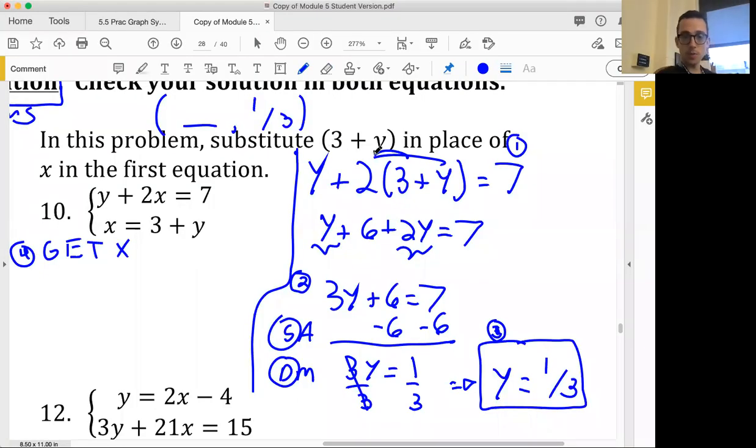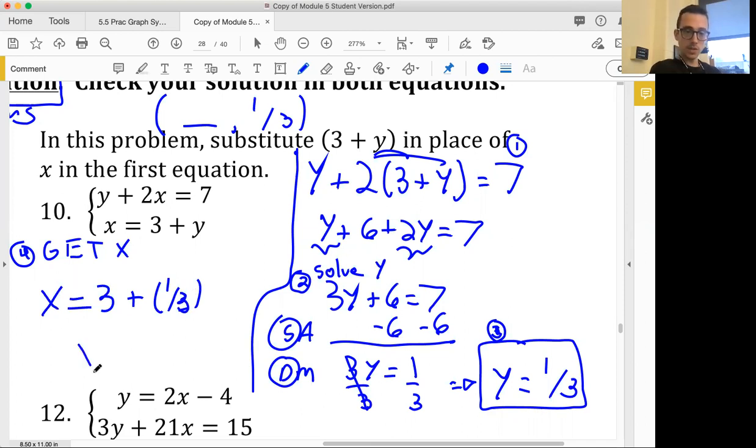You should have gotten this far. You should have plugged in 3 plus y in place of x for the first equation. You should have distributed. You should have eventually solved for y. Here you were solving for y. Eventually you're subtracting 6, dividing by 3, which is okay. You're eventually saying that y equals 1 third. Eventually you can hop over here to step 4 and you're getting x. You know that x equals 3 plus y, but you can now write y as 1 third. So we can now say that x equals 3 and 1 third, a mixed fraction. Not super pretty, but nothing we can't handle. See you in the go.